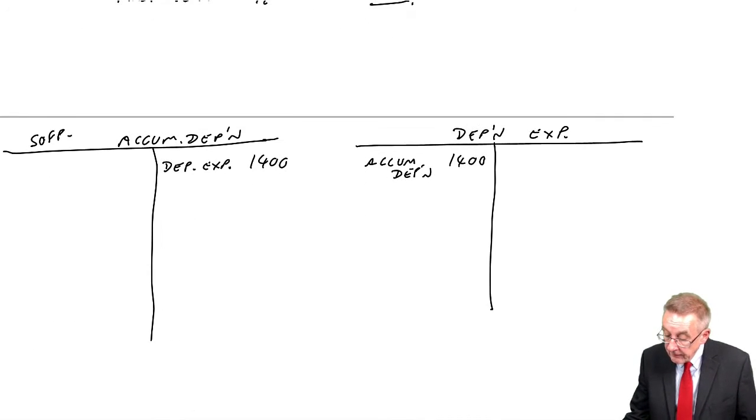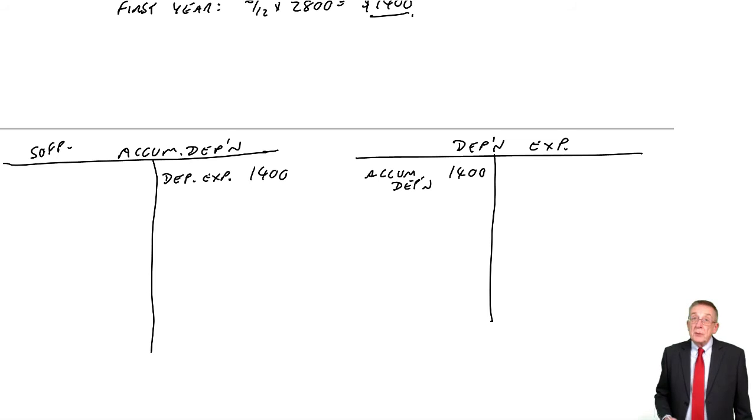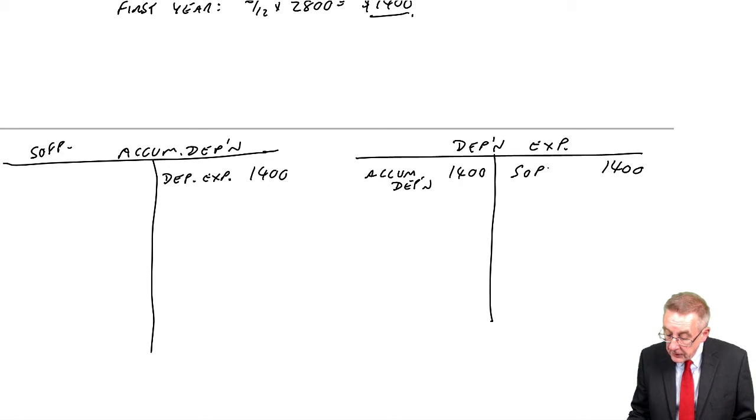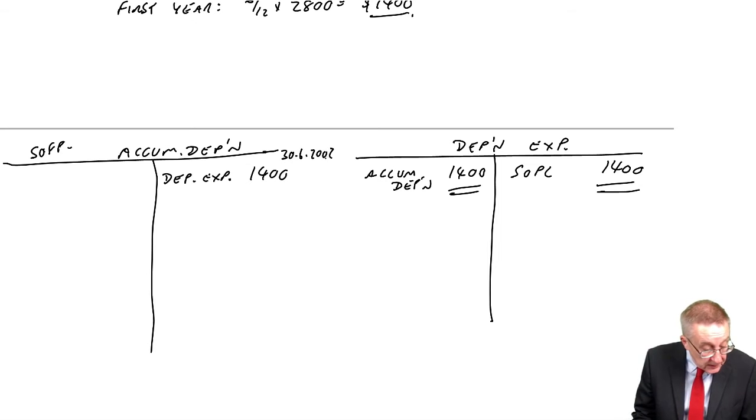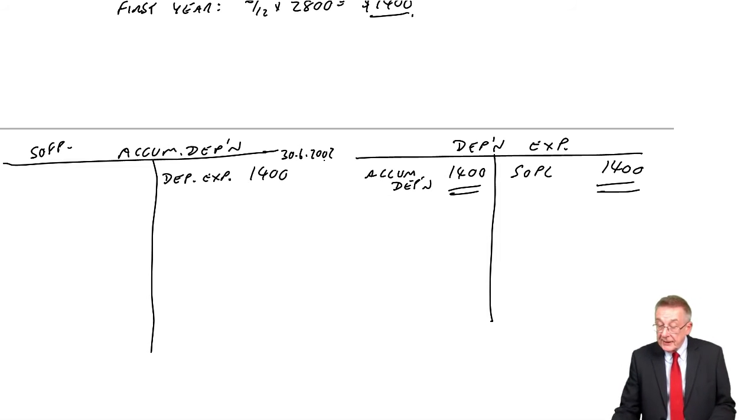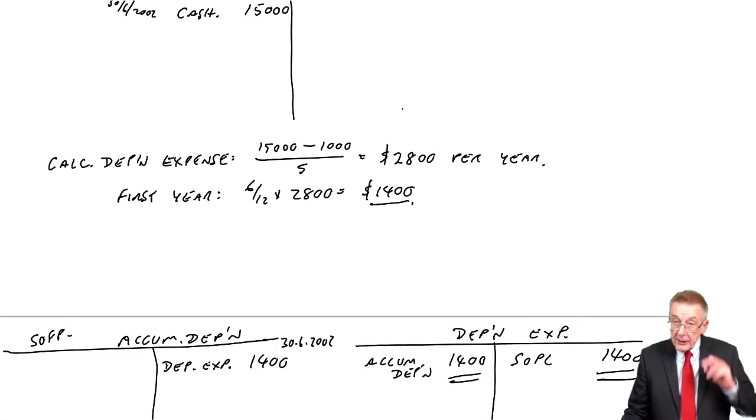The expense account, well, like any expense, we move it to statement of profit or loss. Credit the expense, debit statement of profit or loss. And that account has now zero balance, ready for next year. So that's the end of the first year. That is 30th of June 2002. And there are the balances. No balance on the expense, but we've got those balances on the car and the accumulated.